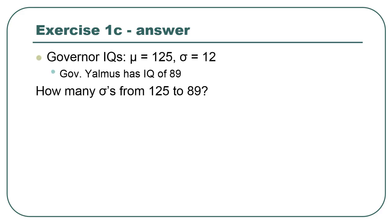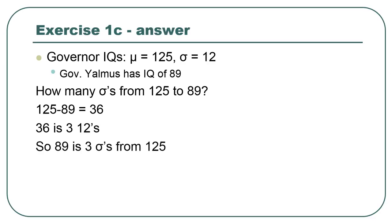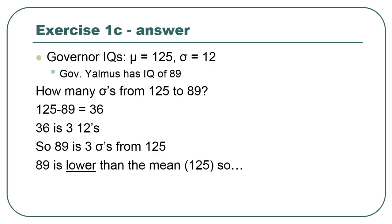Governor Yalmus has an IQ of 89. Remember that the standard deviation is the size of the step you take — how many steps of size 12 do we take before we get to 89 starting at 125? There are 36 points, which is three standard deviations. Three standard deviations from 125, going downward, takes you exactly to 89. So the z-score is negative 3.0.